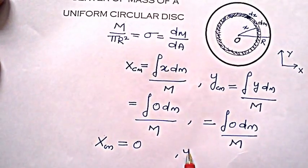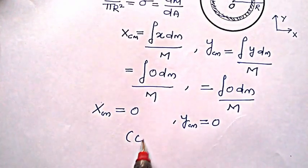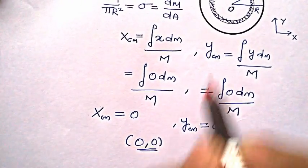So this turns out to be 0, so xcm = 0 and also ycm = 0, which means center of mass lies at the origin which is the same here again.